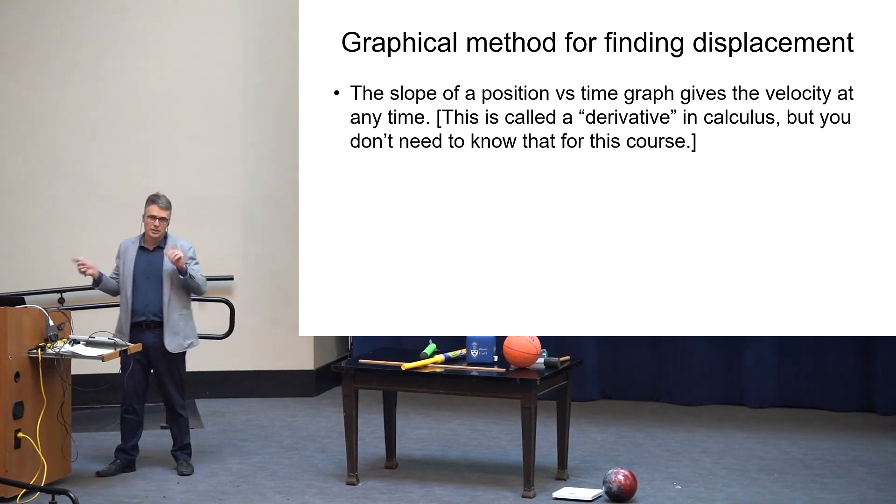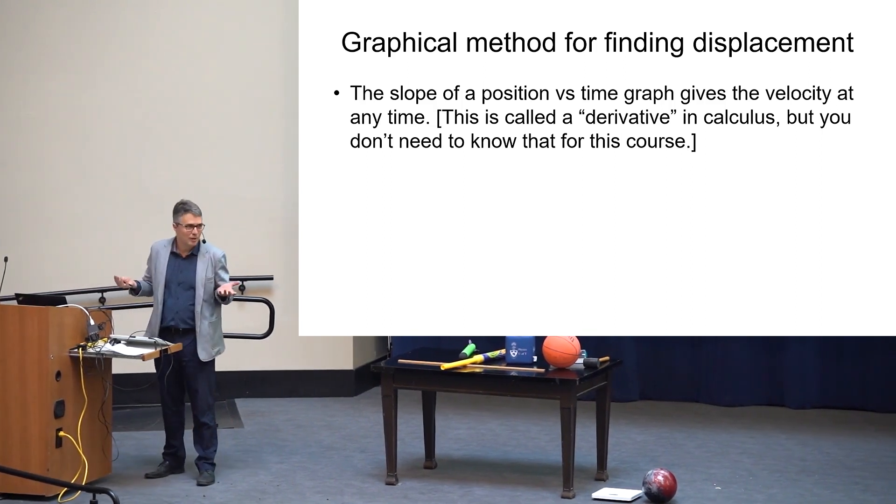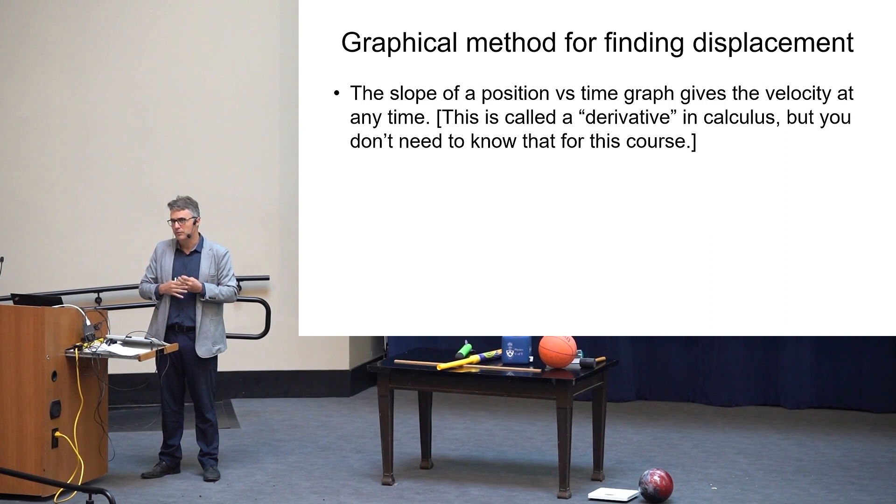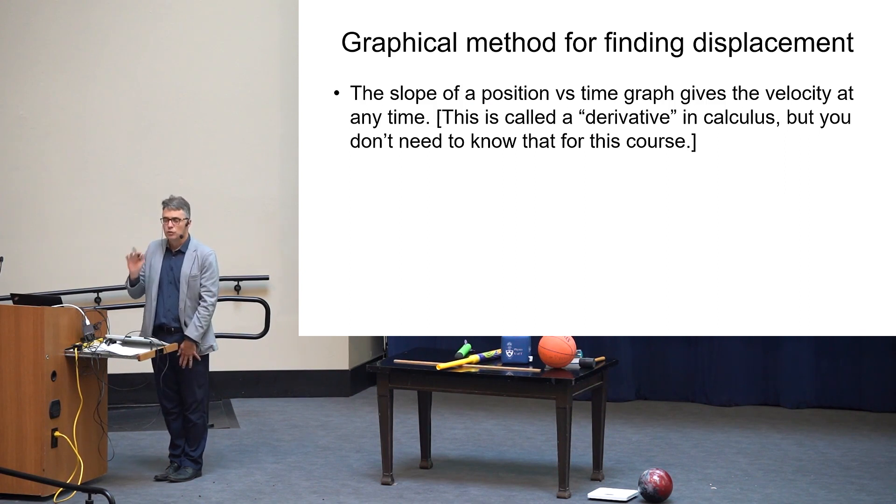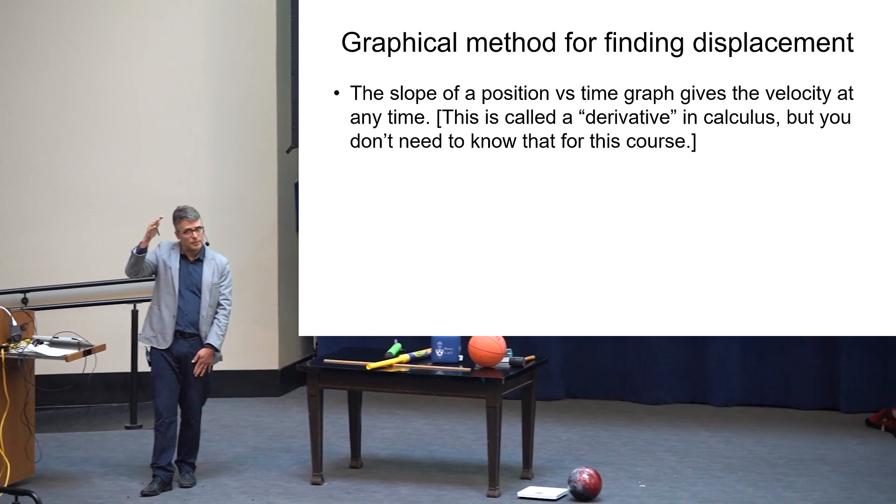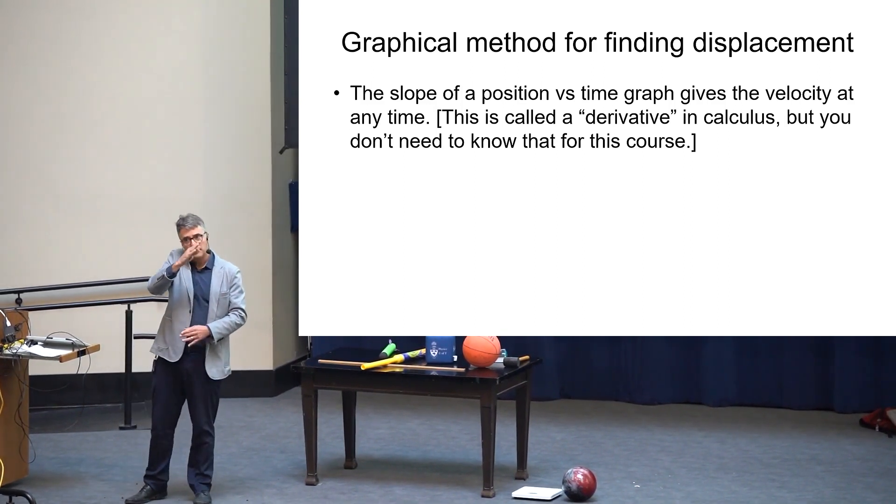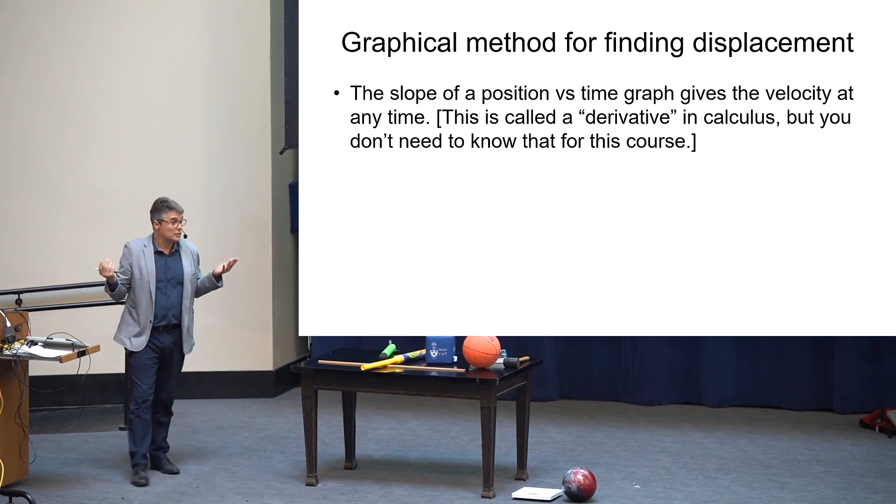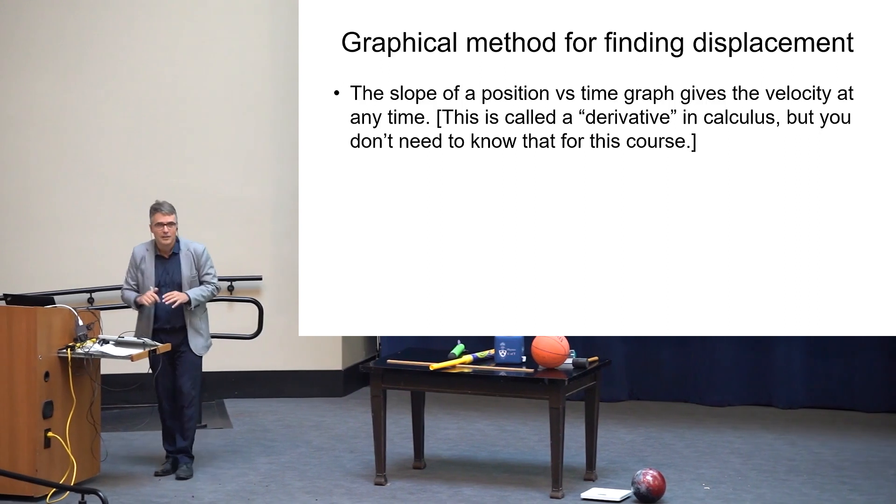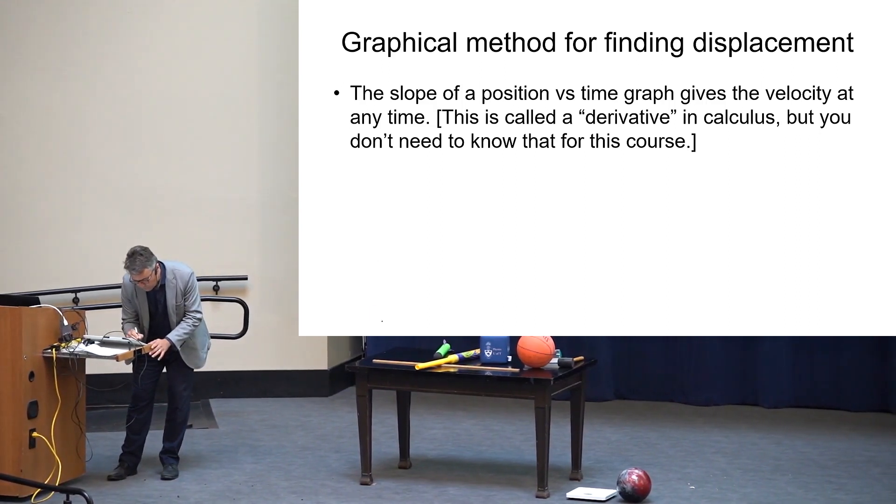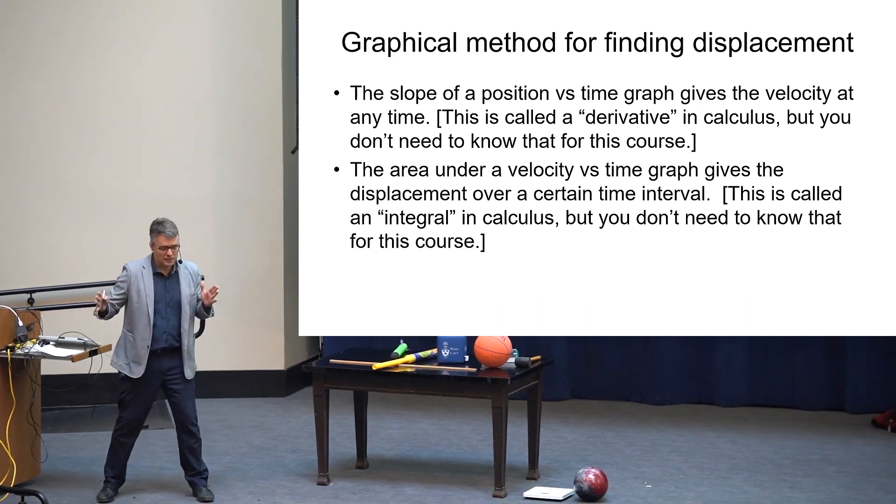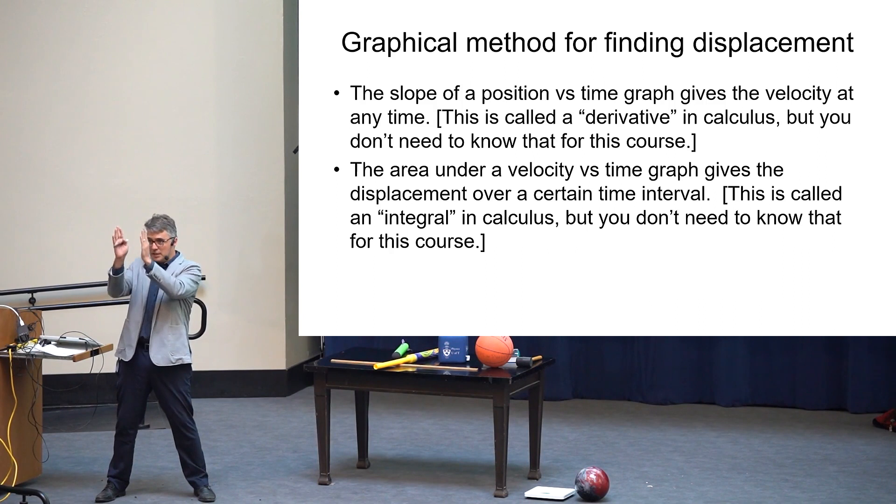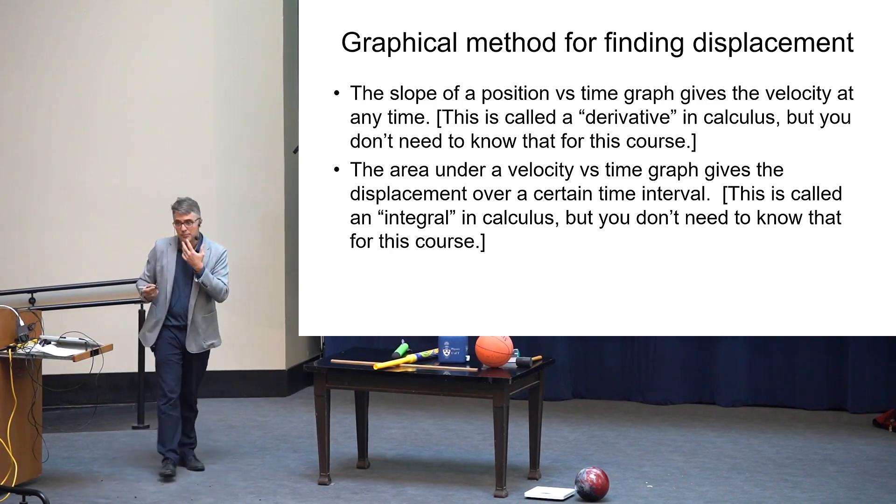Let's go over a graphical method for finding displacement. By the way, chapter two is all we're covering for Tuesday's test. They're mostly chapter two problems because chapter one was more of an intro chapter. The slope of a position versus time graph gives you the velocity. If it's a curved line on position versus time, then you take a tangent at any point to that curve, and that gives you the instantaneous velocity.